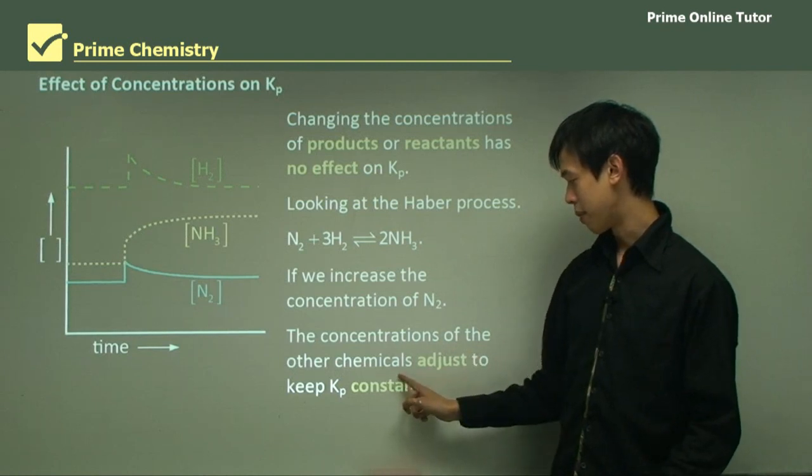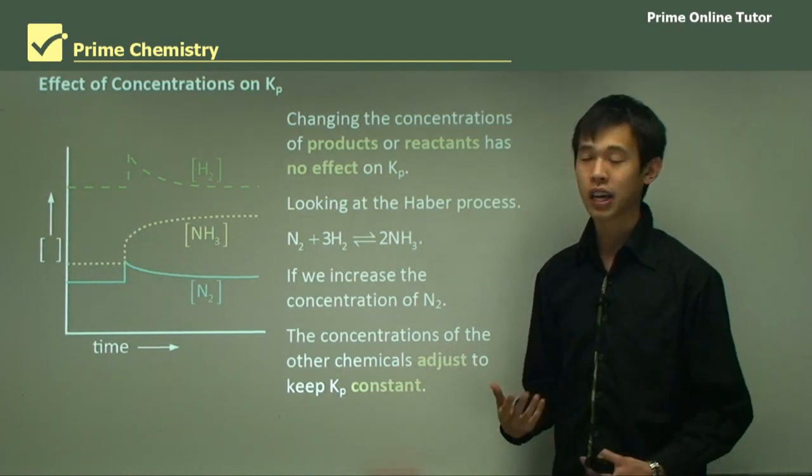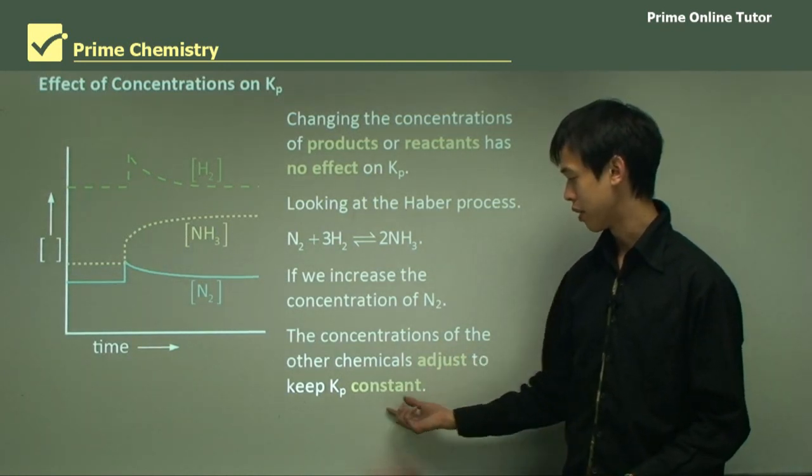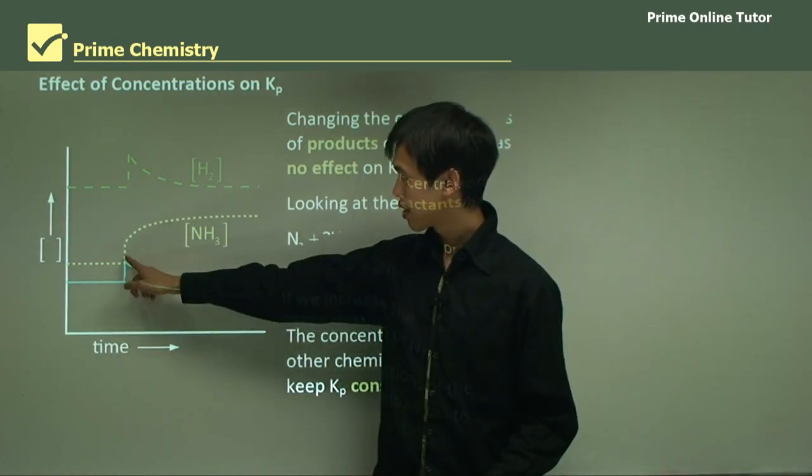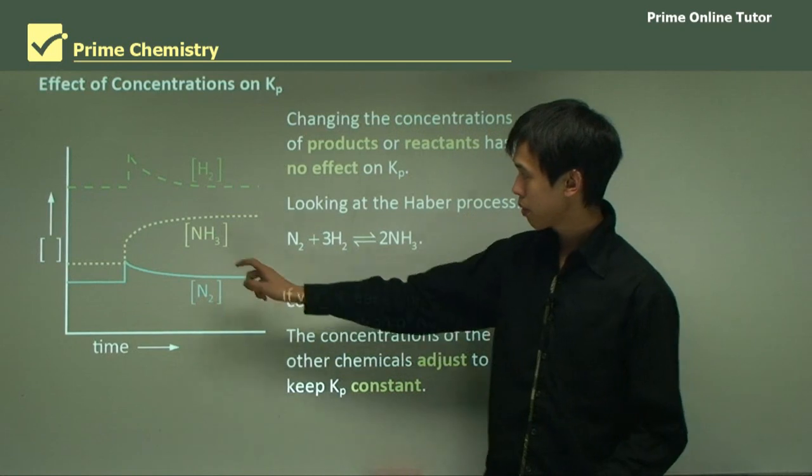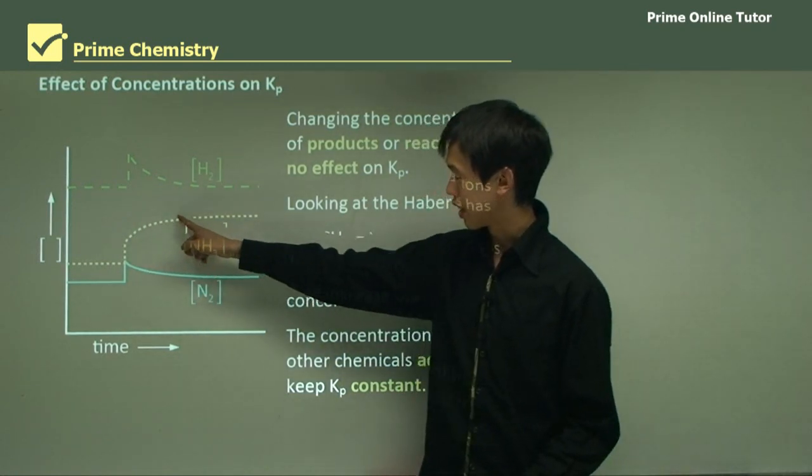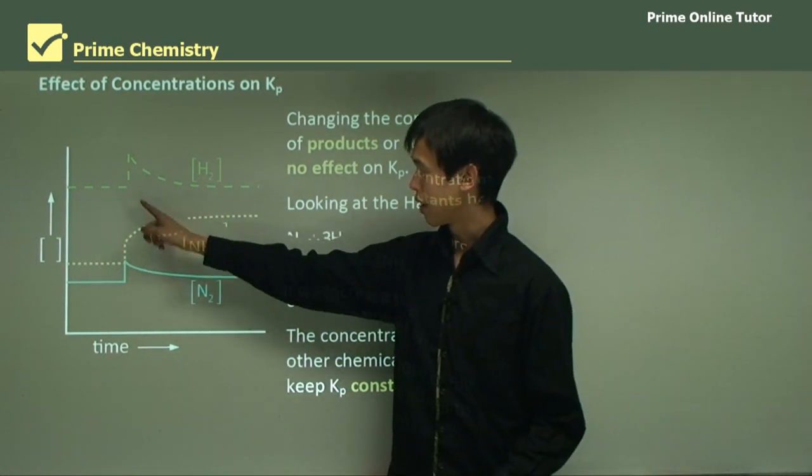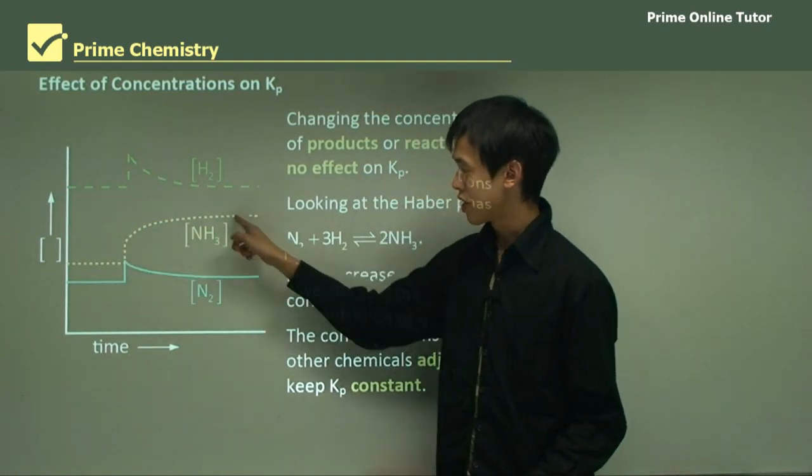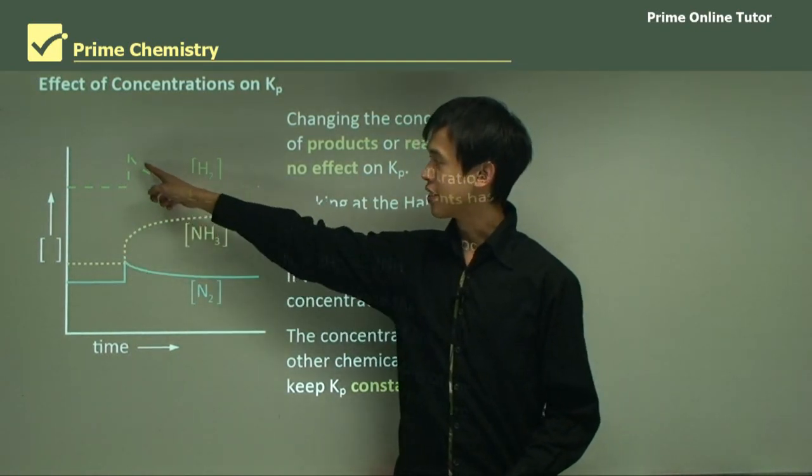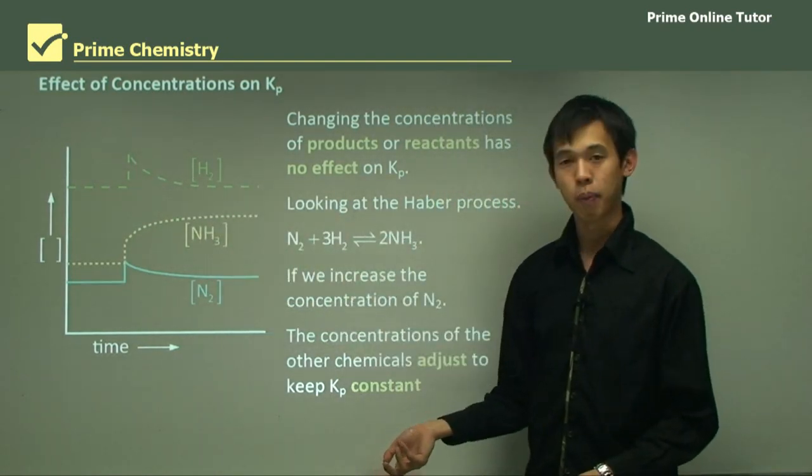The concentrations of the other chemicals adjust to keep the chemical equilibrium, or to keep the Kp constant. So as you can see, as this spikes up, this starts to decline, this starts to increase as well. Also H2 is increasing. So you see that more of this is being created, and you see that there's a decrease right after the increase has happened.